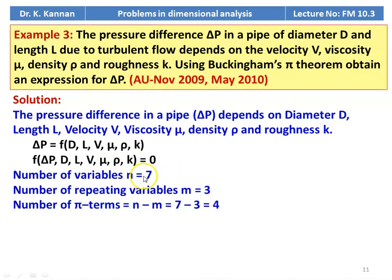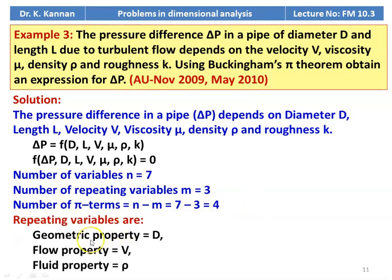For the Buckingham Pi method: f(ΔP, D, L, V, mu, rho, k) = 0. Number of variables = 7. We identify 3 repeating variables: one geometric property (D), one flow property (V), and one fluid property (rho). Number of pi terms = n − m = 7 − 3 = 4. Non-repeating variables are ΔP, L, mu, and k.